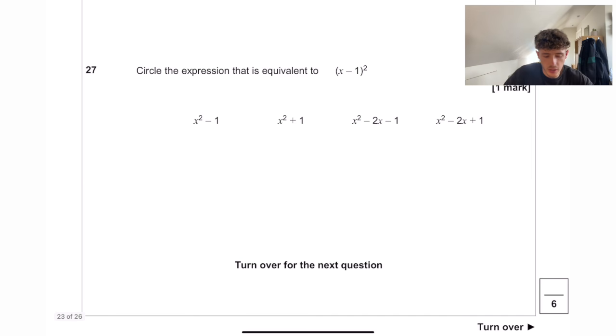Circle the expression that is equivalent to x minus 1 all squared. If we expand this out, it's just going to be x minus 1, x minus 1, x squared minus 2x plus 1, this one right there.